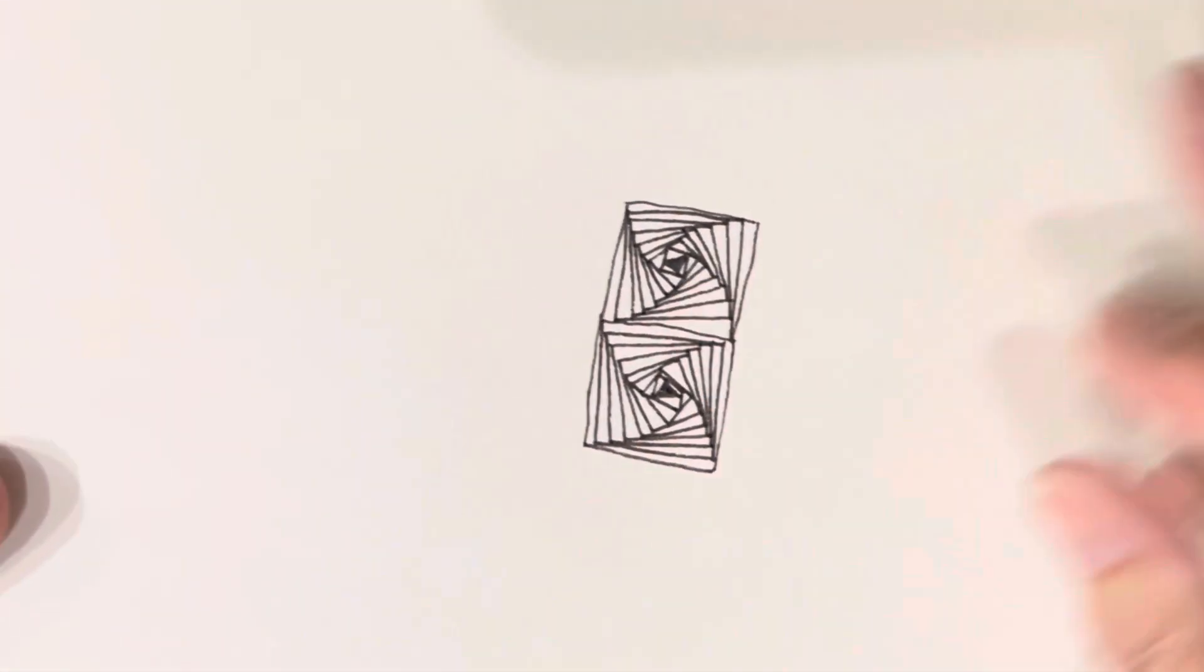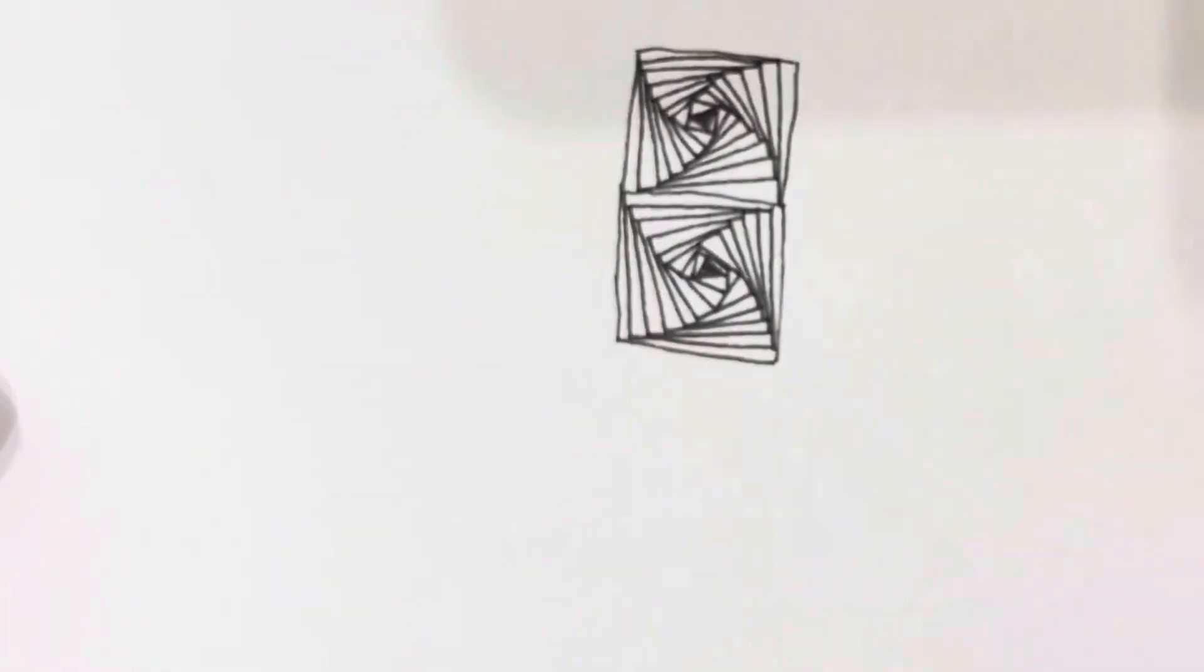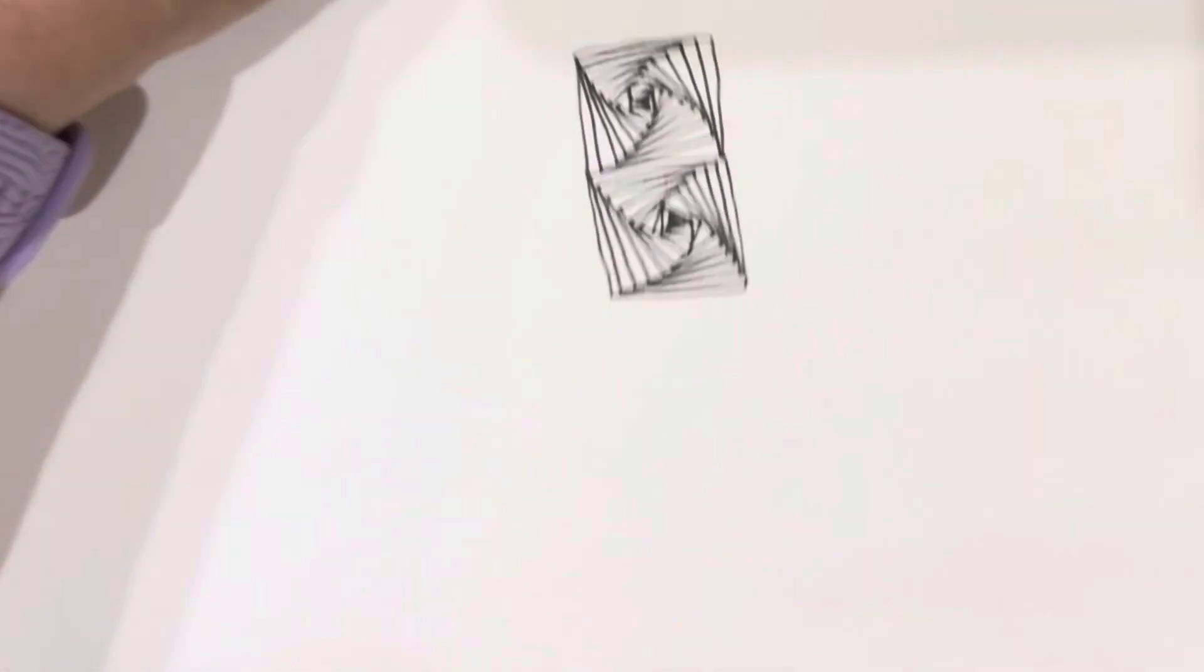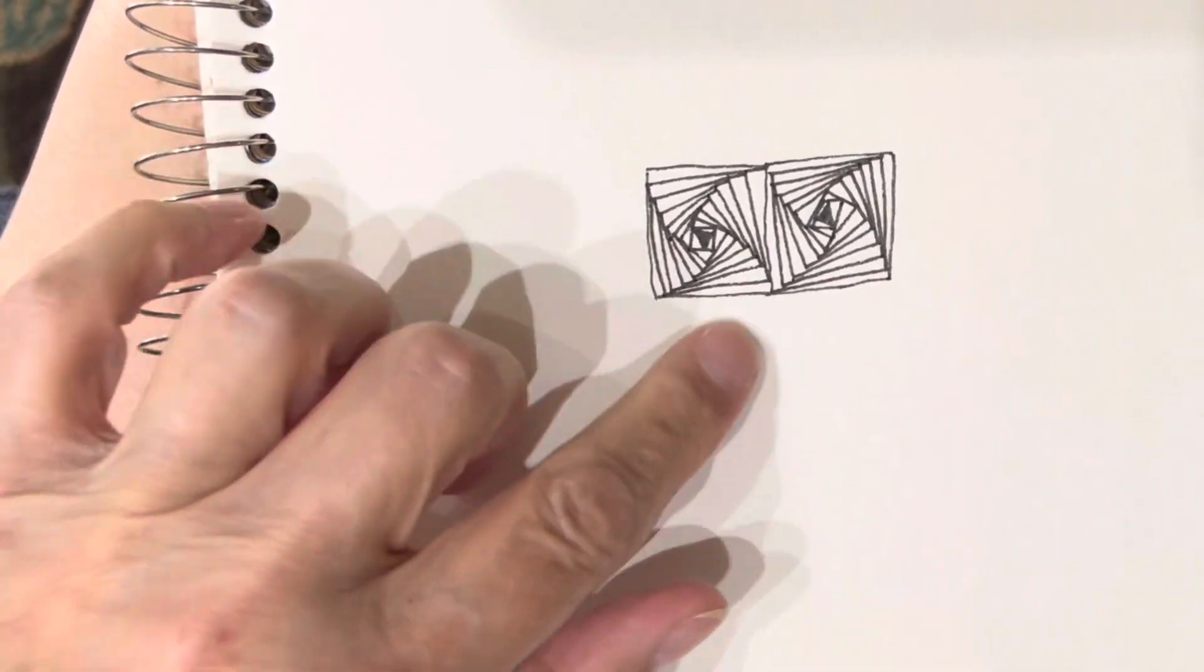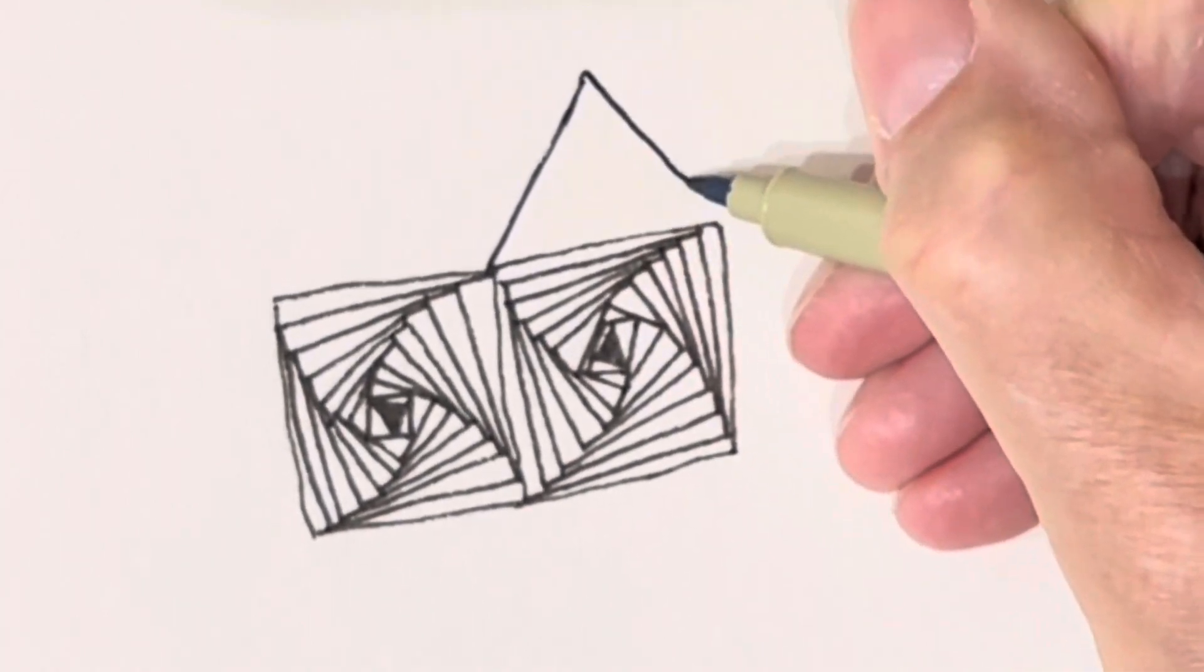Look at that. Look at how this looks like a twisted sort of a thing, right? But it's just two squares. Okay, so then what I did on the one that I showed you in the beginning is then I did it with a triangle.